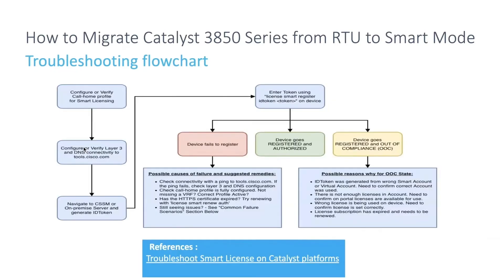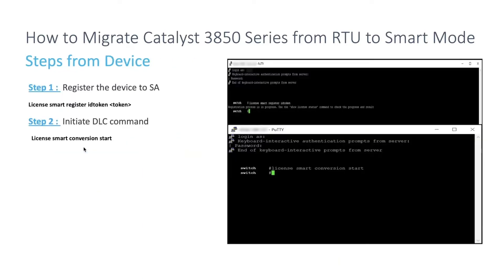Just to make sure I've got it right: we generate the token from the smart account website, copy it, head over to the device, run 'license smart register idtoken' and paste in the token, then run 'license smart conversion start' — and that's it? That's it, as easy as it sounds!